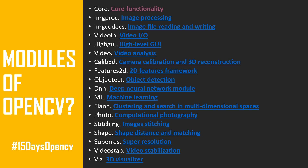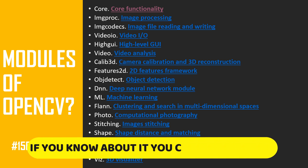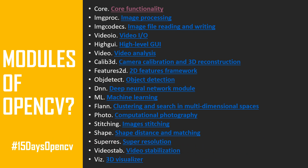OpenCV has several modules. The first is called 'core,' used for basic core functions like data structures shared with other modules. The second is 'imgproc,' used for image pre-processing — it has many classes and methods for that purpose. The third is 'imgcodecs,' which is important for reading and writing images. The fourth is 'videoio,' for video input and output.